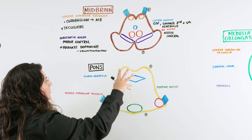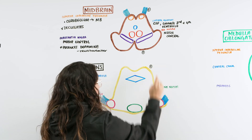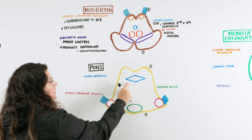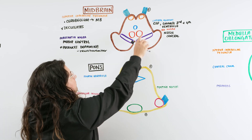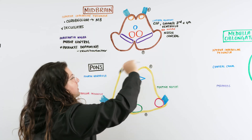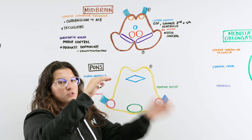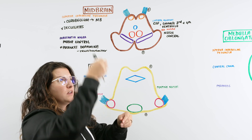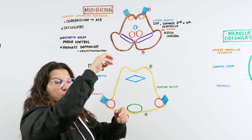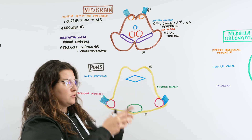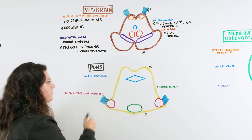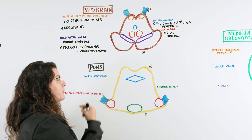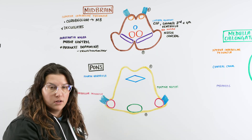Moving on to the pons — same transverse section, posterior at top, anterior at bottom. The first structure we identify is the fourth ventricle in the middle. The cerebral aqueduct from the midbrain connects the third and fourth ventricles — think of it as a little third ventricle pocket, connected by a small tube or straw, leading down to the fourth ventricle. Within the fourth ventricle in the pons, we have cerebrospinal fluid — with both production and circulation of CSF occurring here.